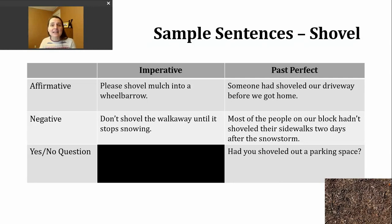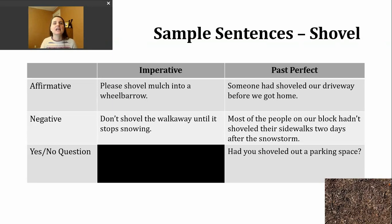Now let's take a look at the past perfect. We use this verb tense to note that something was completed at a time in the past before another action. To make the past perfect, we use the past form of have, which is had, and then the participle form of the verb. This structure is the same no matter what the subject is — I, you, we, they, he, she, or it — it's going to be had plus the participle. Here's an example sentence: Someone had shoveled our driveway before we got home. Had shoveled notes that the action was completed before the action of arriving at home.